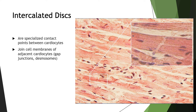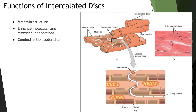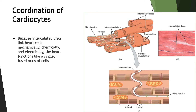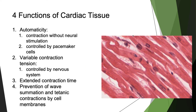Intercalated discs are specialized contact points between cardiocytes, joining cell membranes of adjacent cardiocytes via gap junctions and desmosomes. These connections stabilize the relative positions of adjacent cells and allow direct electrical, chemical, and mechanical connections, so that the cardiac muscle cells act as an enormous single unit — this ability is called the functional syncytium. Functions of cardiac muscle tissue include auto-rhythmia, or contraction without neural stimulation, controlled by pacemaker cells; variable contraction tension controlled by the nervous system; extended contraction time; and prevention of wave summation and tetanic contraction, controlled by cell membranes.